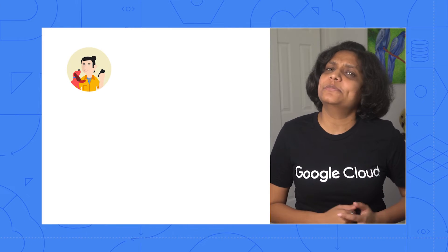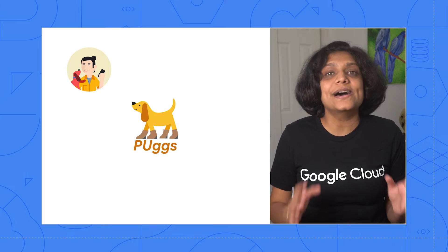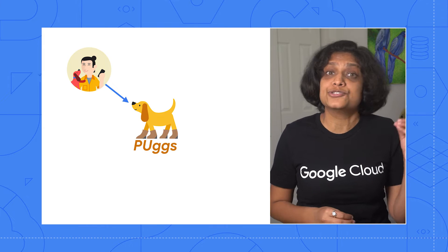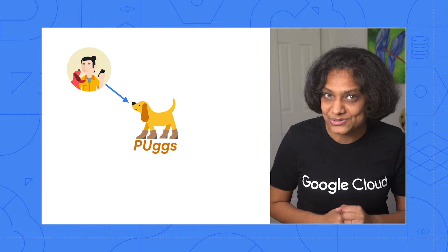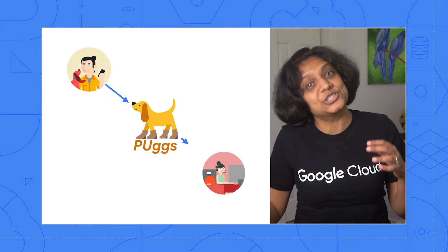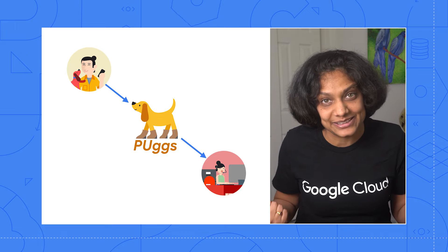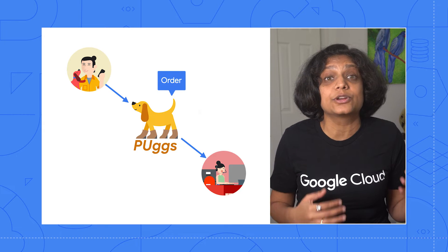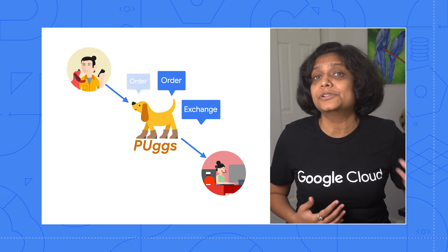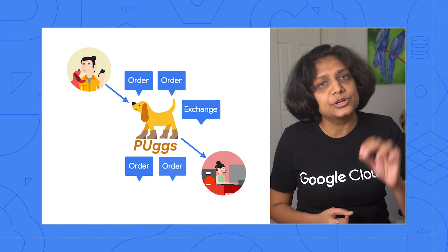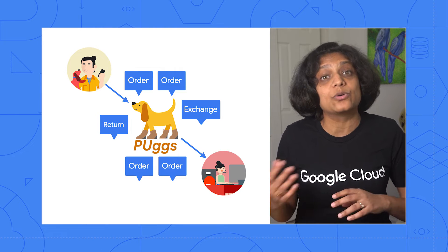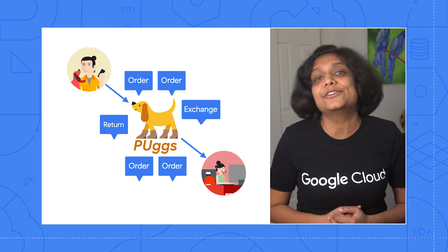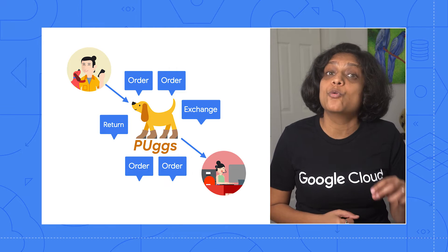Like any e-commerce company, Pugs has customers that call in for ordering cute dog shoes and for returning or exchanging them. As you can imagine, each of these topics require multiple conversational turns for the virtual agent to acquire necessary information for that customer. That's where flows come in.